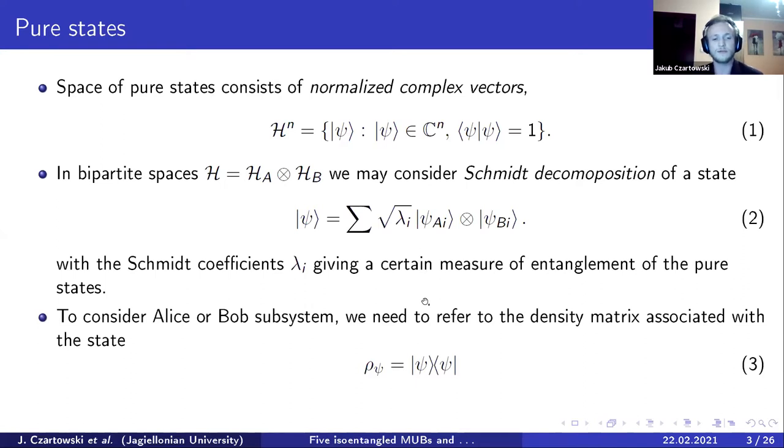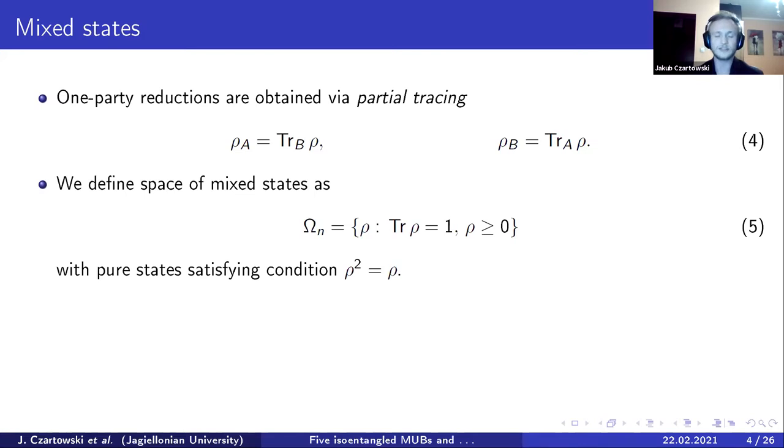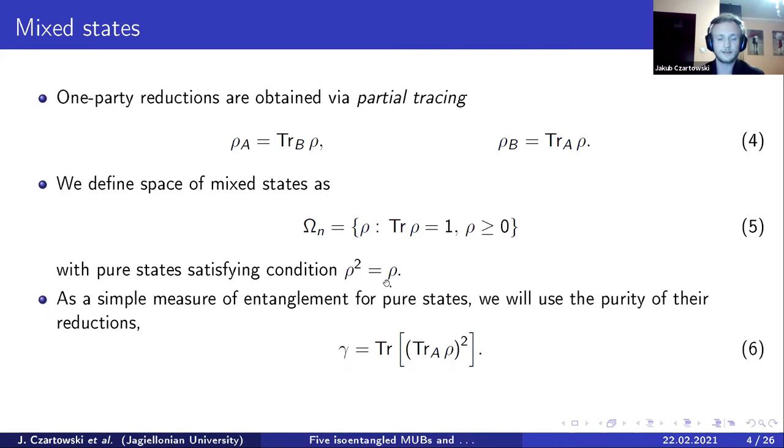However, in order to consider what is going on with Alice or Bob, we need to shift our view to the density matrices, which is also a very well-known topic to our community. In order to see the states themselves, we of course need to consider the partial tracing. So just to reiterate what is well-known, the space of mixed states is composed by the semi-definite positive matrices of single trace, and those that are squared to themselves can be seen as pure states. And in what follows, we will use purity as a measure of entanglement. That is the trace of the squared reduction.